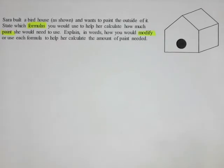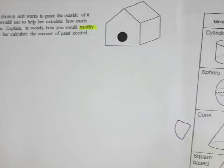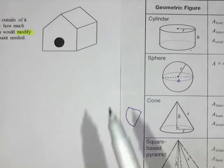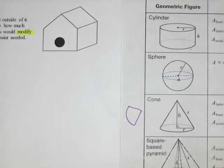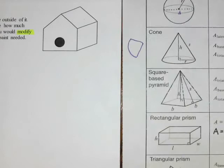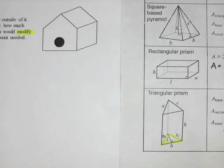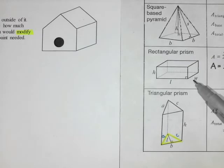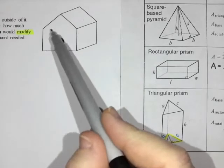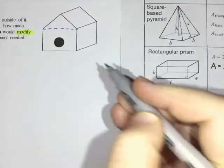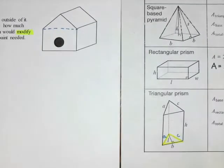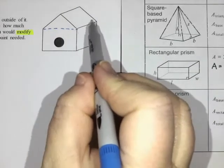The first thing you want to do is look at your picture and think about the different volumetric solids — figure out what shapes are there. Looking at my formula sheet, there aren't any curves except for the hole; it's mostly straight sides. That makes me think it's going to be one of the bottom three shapes: a square base pyramid, a rectangular prism, or a triangular prism. I think the bottom part is a rectangular prism.